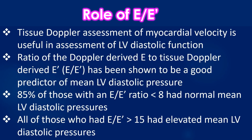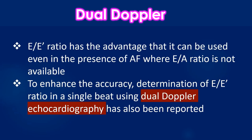Tissue Doppler assessment of myocardial velocity is useful in assessment of left ventricular diastolic function. The ratio of Doppler derived E to Tissue Doppler derived E prime — or E by E prime ratio — has been shown to be a good predictor of mean left ventricular diastolic pressure. 85% of those with E by E prime ratio less than 8 had normal mean left ventricular diastolic pressures, and all of those with E by E prime ratio more than 15 had elevated left ventricular diastolic pressures. E by E prime ratio has the advantage that it can be used even in the presence of atrial fibrillation, where E by A ratio is not available. To enhance the accuracy, determination of E by E prime ratio in a single beat using dual Doppler echocardiography has also been reported.